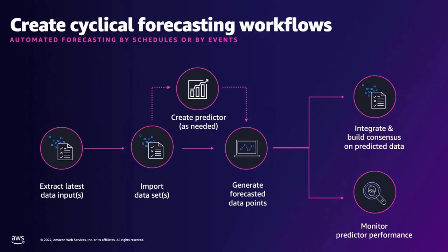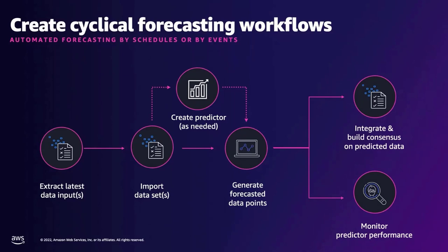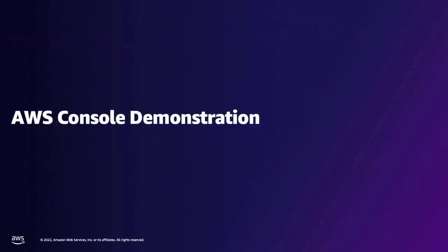This shows a typical sequence of events at a prediction cycle — the same whether it's daily, weekly, monthly, or otherwise. First, you harvest historical data from where it lives at rest. Next, you import that into Amazon Forecast. Sometimes a new predictor or model is created, as these can be stable for days, weeks, or months. Then forecasted data points are generated. Finally, you take the CSV data from Amazon Forecast and integrate it into enterprise systems including ERP systems and BI platforms.